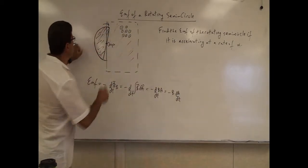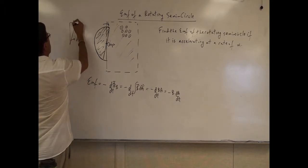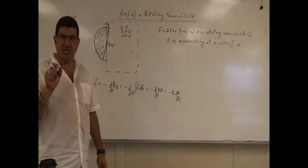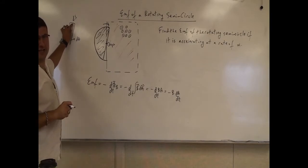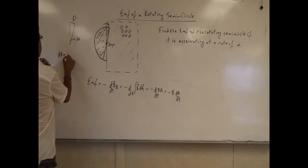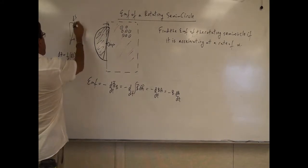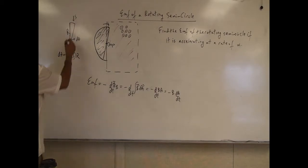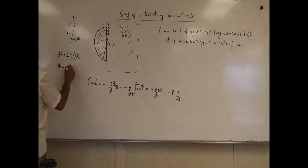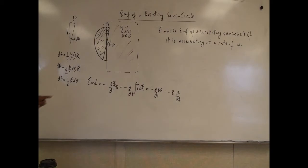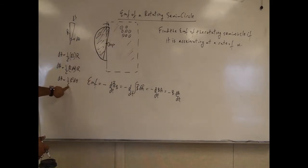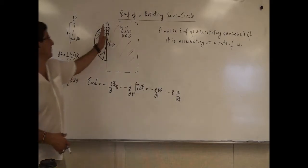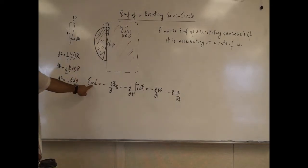Now we need the equation for the small area element. The swept region has an angle dθ and arc length DS. Since the arc is very small, it acts like a triangle, so DA = ½ base × height = ½ DS · R. Since DS = R dθ, we get DA = ½ R² dθ. This is the small area increasing over time as the semicircle rotates — proportional to R² and the increasing angle θ.